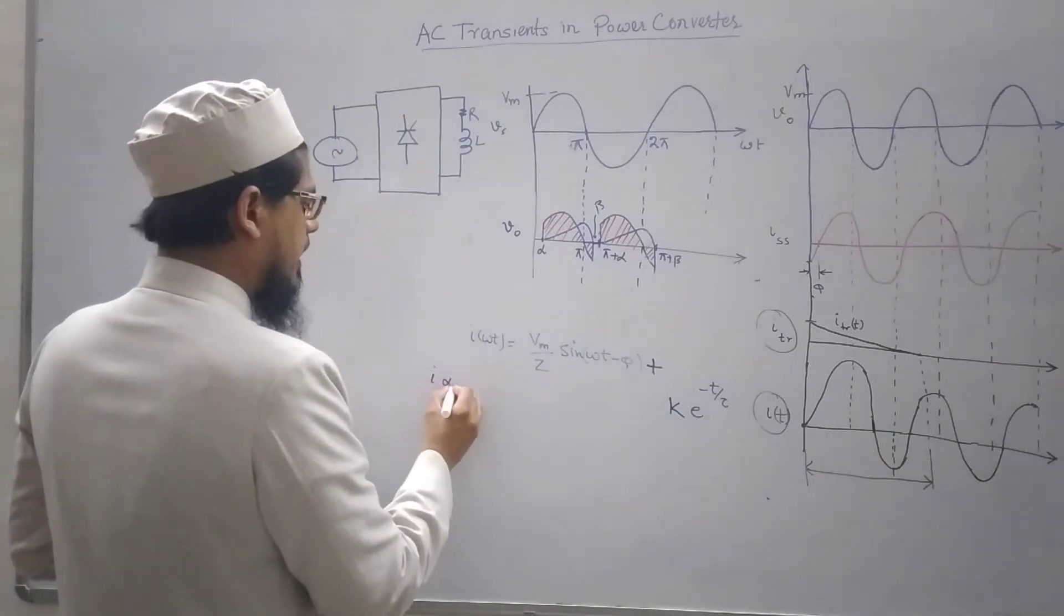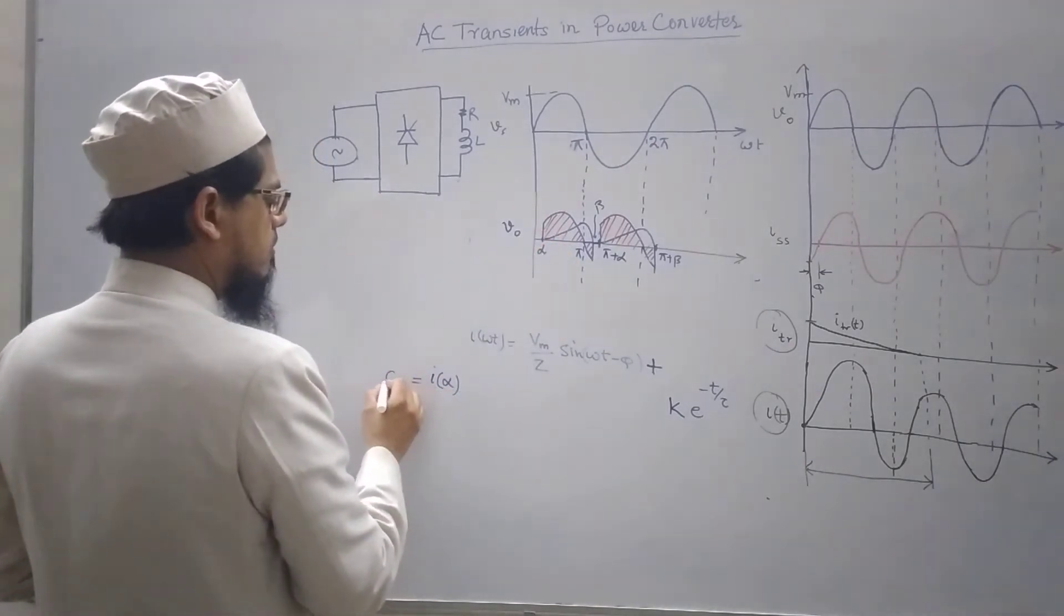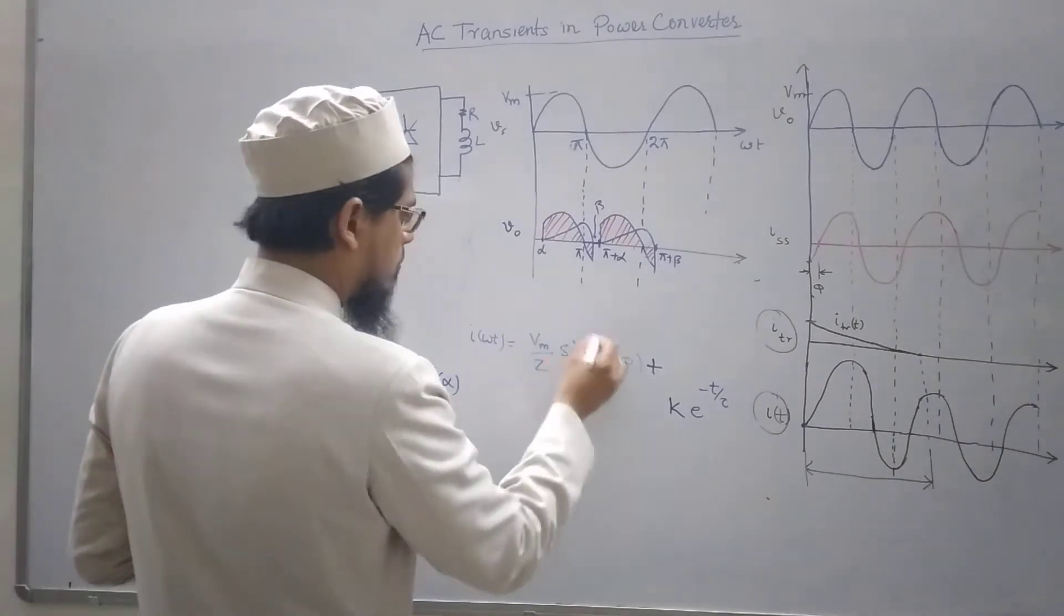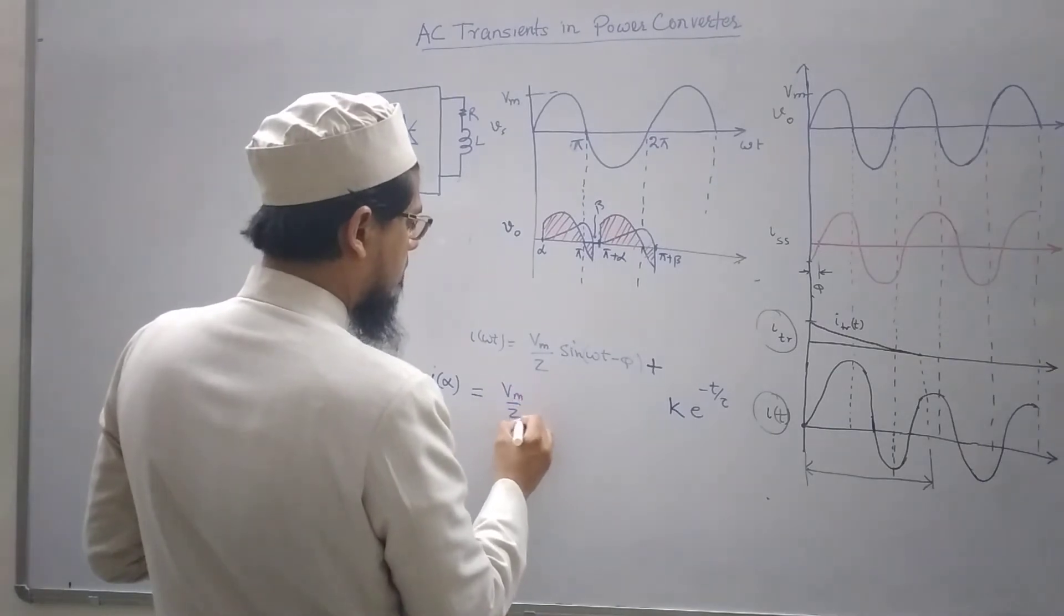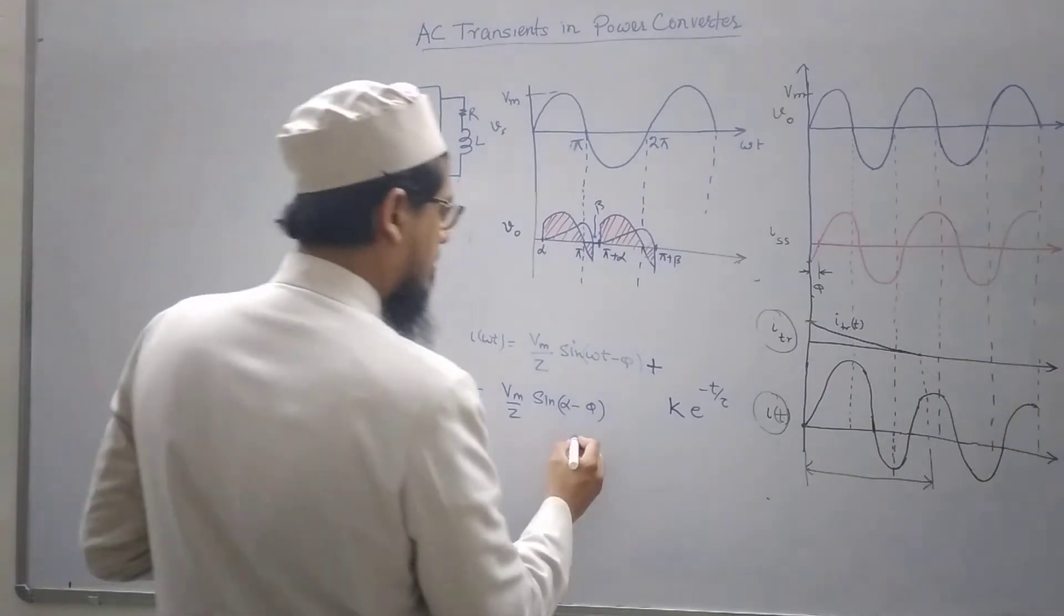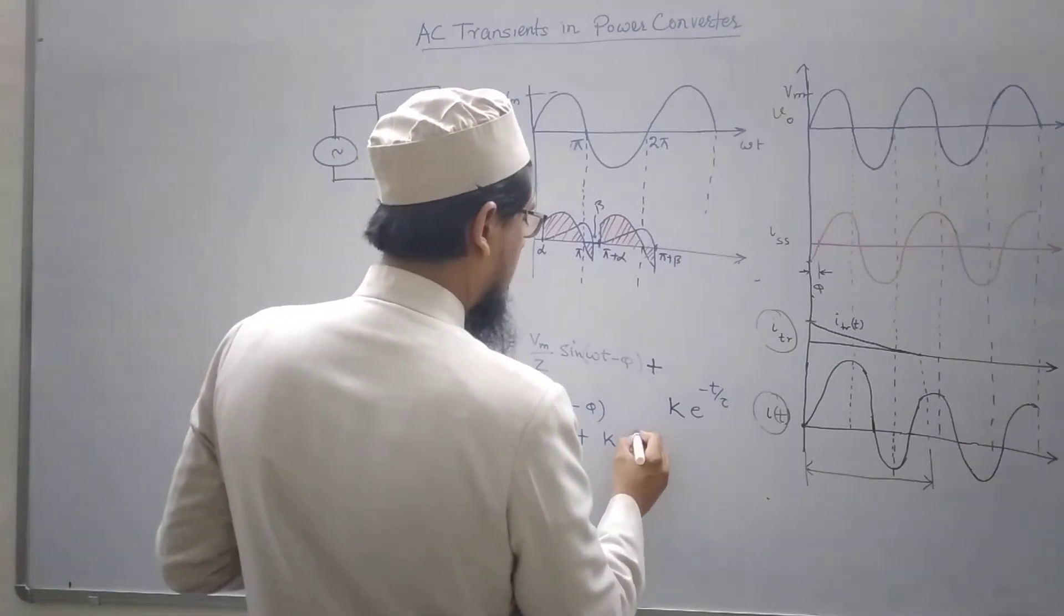We know that at I alpha the current is zero. At omega t equals to alpha, what would be this expression? This would be Vm by z sin alpha minus phi plus k times e to the power minus.